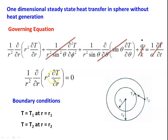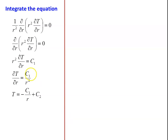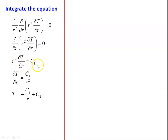The governing equation is to be solved within these boundary conditions to find the temperature distribution and heat transfer for the one-dimensional sphere. Integrating the equation: take r² to the right side, giving ∂/∂r(r² ∂T/∂r) = 0. Integrating the first time gives r² (∂T/∂r) = C₁, and rearranging gives ∂T/∂r = C₁/r².